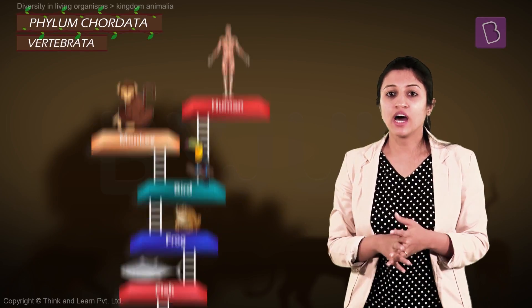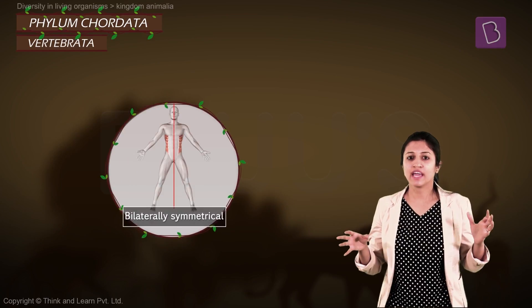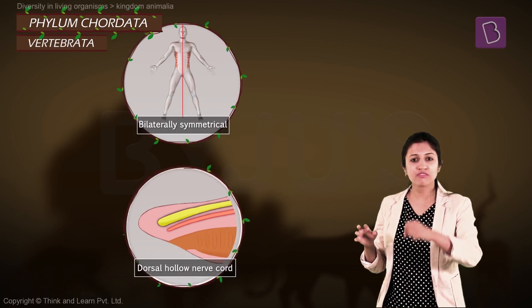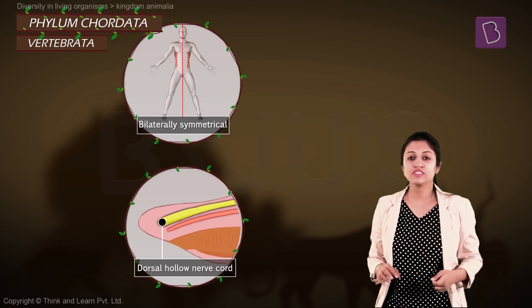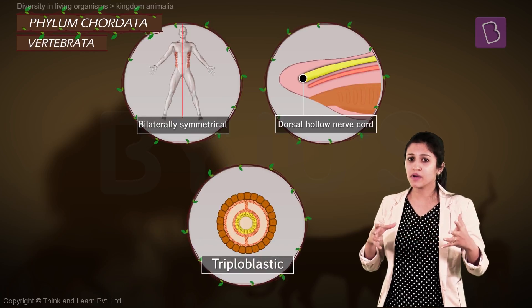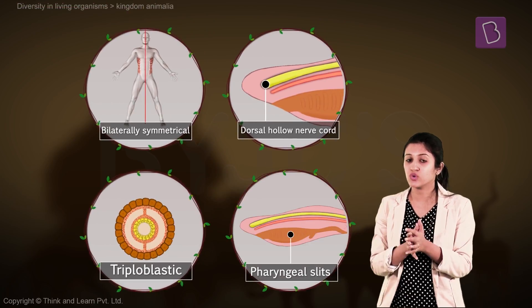All vertebrates are bilaterally symmetrical. They have the dorsal hollow nerve cord that was introduced in notochords. They are triploblastic, have gill pouches or pharyngeal slits like their notochord buddies.